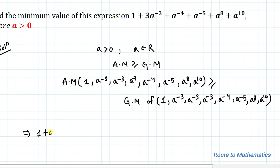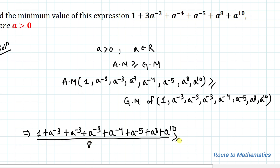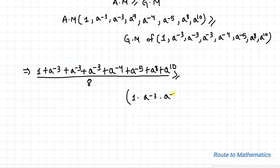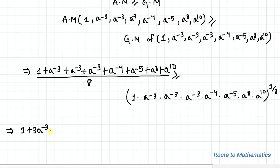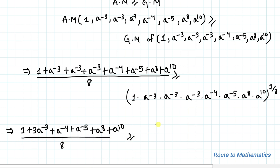This implies: 1 plus a^(-3) plus a^(-3) plus a^(-3) plus a^(-4) plus a^(-5) plus a^8 plus a^(10). We have 8 terms, so dividing by 8 must be greater than or equal to the 8th root of 1 multiplied with a^(-3) · a^(-3) · a^(-3) · a^(-4) · a^(-5) · a^8 · a^(10), all to the power of 1/8.